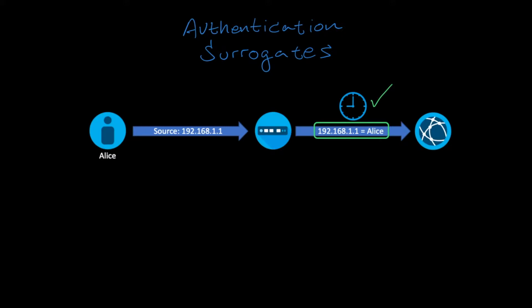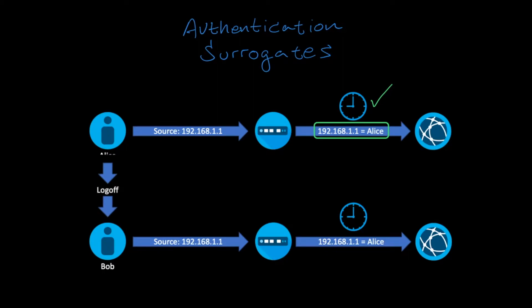But consider an organization where multiple users may access the same computer throughout the day. If one user has logged in and successfully authenticated to the proxy and then logged out, a second user could log into the same computer with a different account and continue to access the internet as the first user for the duration of the surrogate timeout because the only thing the WSA is checking is the Source IP Address.